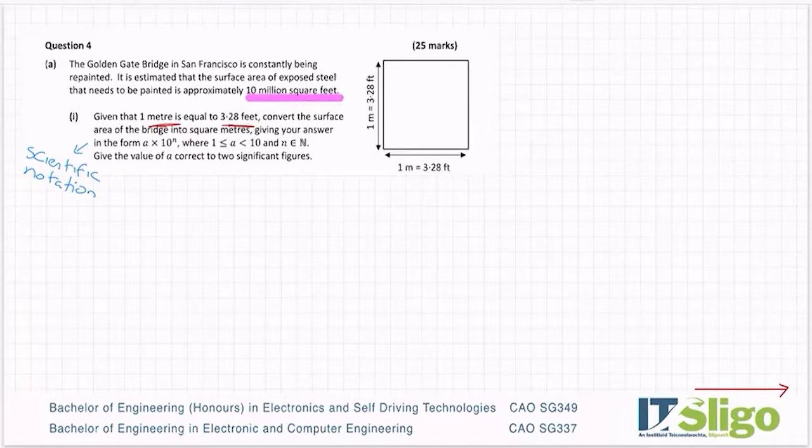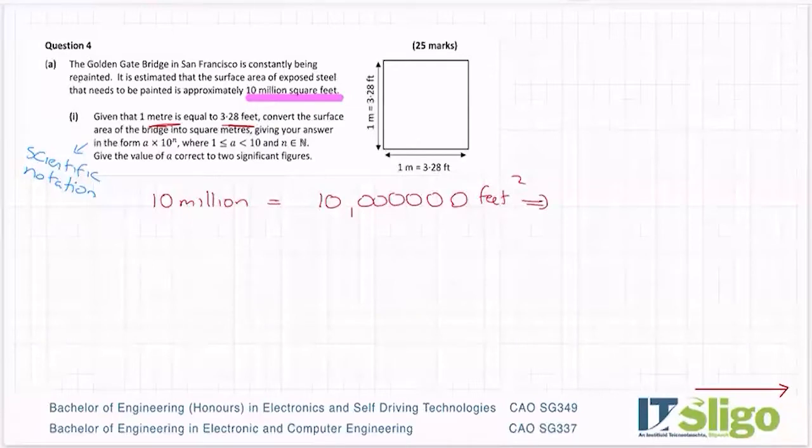So I hope that makes sense. That's why I tend to be very cautious when I'm dealing with squares, square feet or square metres or square anything. So given that one metre is equal to 3.28 feet, convert the surface area of the bridge to square metres. So 10 million is equal to 10 and 1, 2, 3, 4, 5, 6. So that is 10 million.